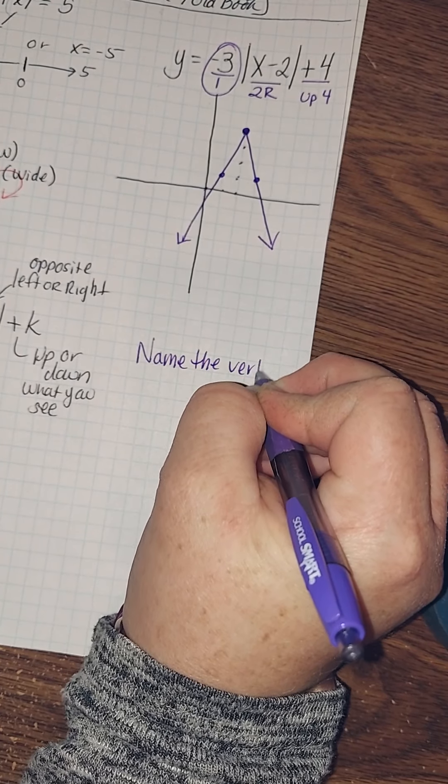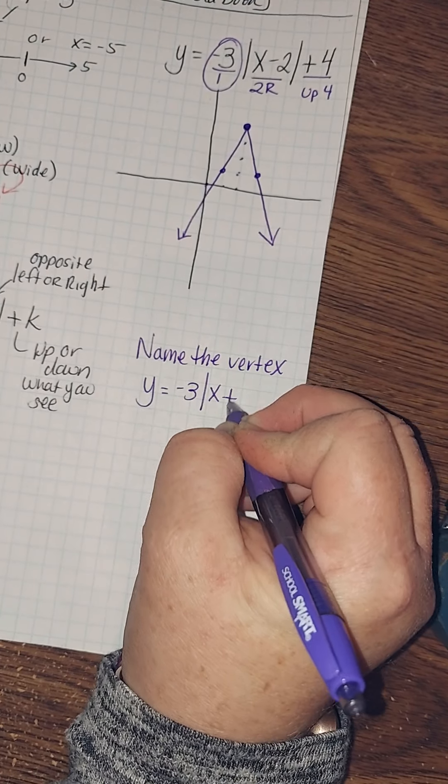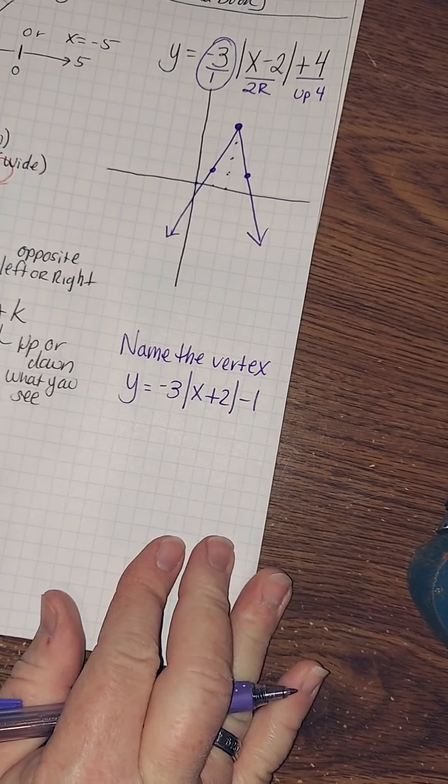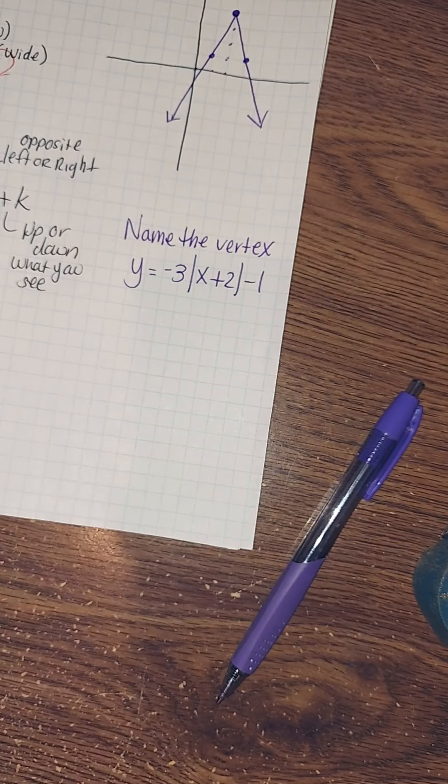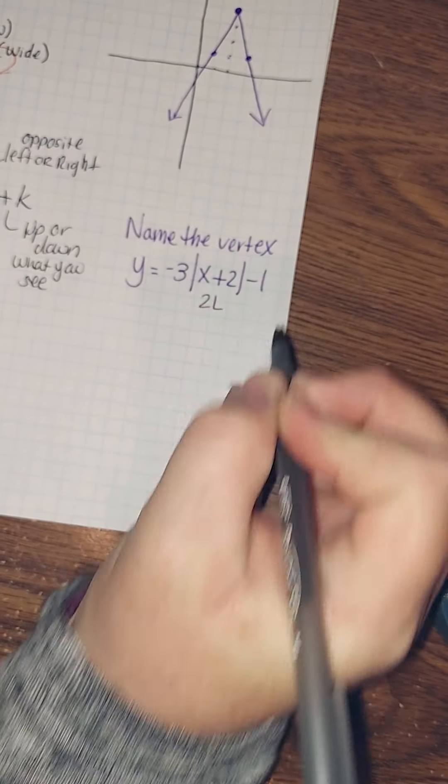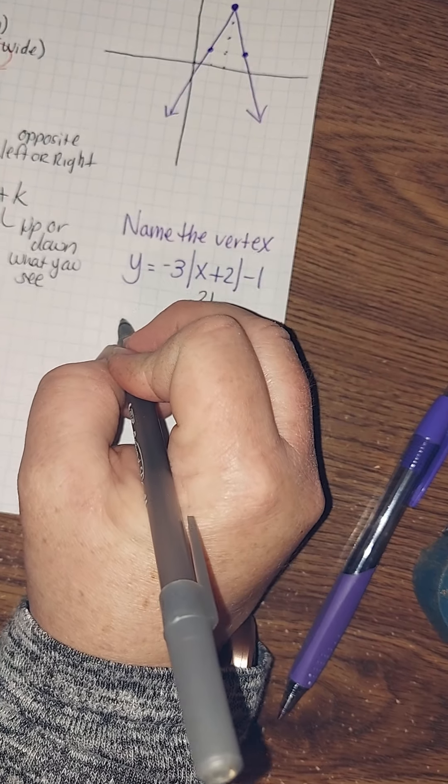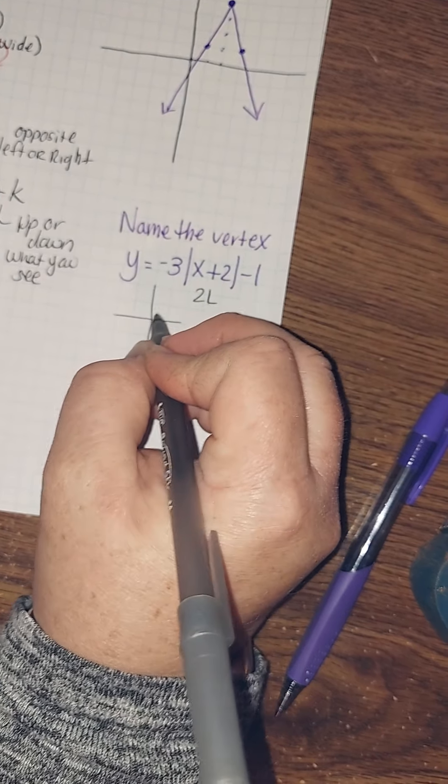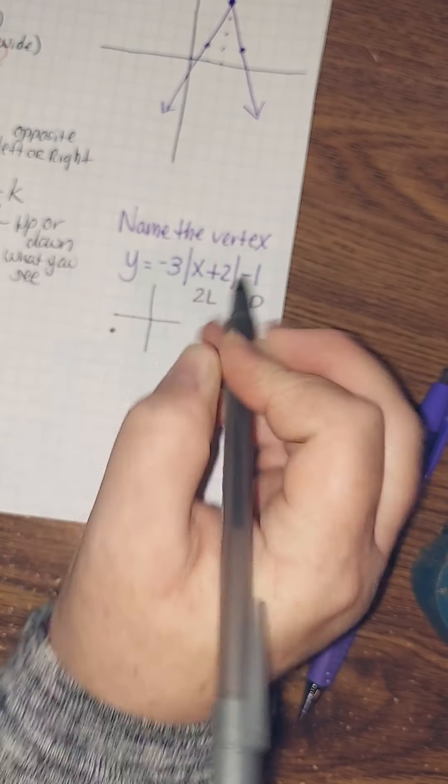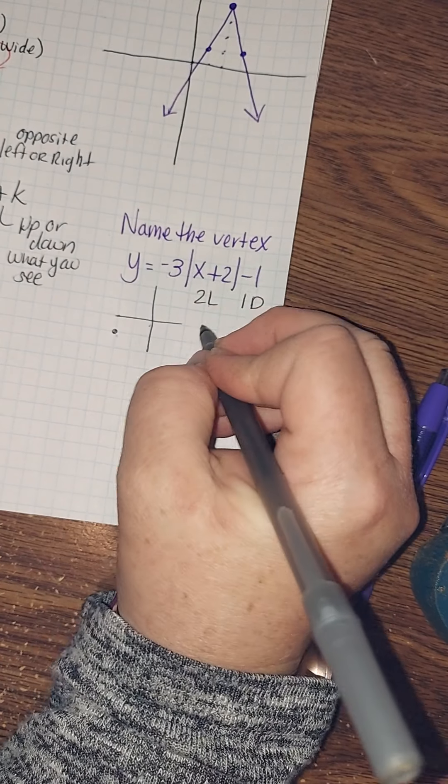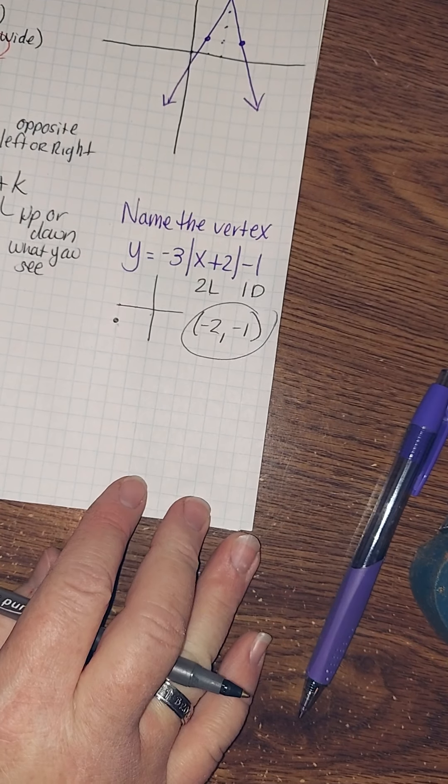All right. So need the vertex of this. Are you ready? So let's think about, let's look at the translation. Where am I going? Two to the left. So what's two to the left from zero, zero, right? If I did a makeshift graph here, two to the left and one down. So two to the left, one down. So what's my new vertex? Well, that's easy. Negative two, negative one. Done.